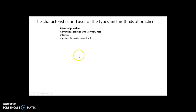Mass practice - basically practicing en masse, but you can't say that. You've got to say continuous practice with very few rest intervals. So you're doing something over and over and over again. A good example is basketball players doing free throws - a set shot in basketball, just keep practicing and practicing because they have a clear start and finish, so you get lots of repetition.